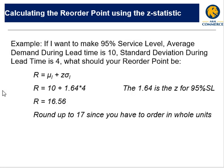Here's an example. If I wanted a 95% service level, my average demand during lead time is 10, my standard deviation during lead time is 4, my reorder point can be calculated by doing this.